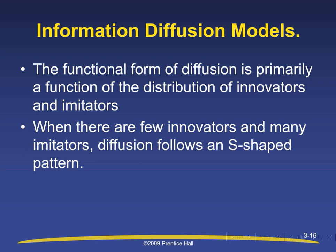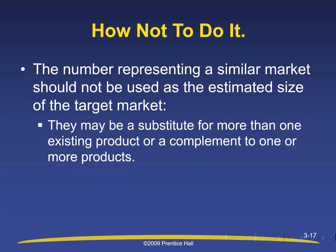Information Diffusion Models: the functional form of diffusion is primarily a function of the distribution of innovators and imitators. When there are few innovators and many imitators, diffusion follows an S-shaped pattern. The number representing a similar market should not be used as the estimated size of the target market, as a product may be a substitute for more than one existing product or a complement to one or more products.